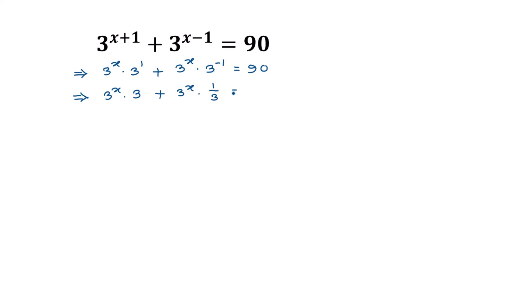Now taking 3 to the power x as a common factor from the left side, we get 3 to the power x times the quantity 3 plus 1 over 3, and this is equal to 90.